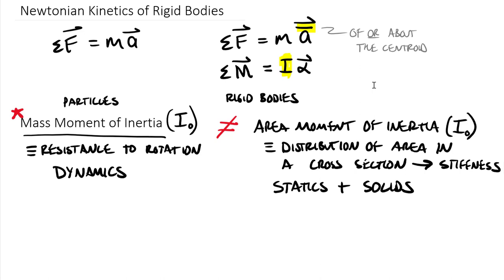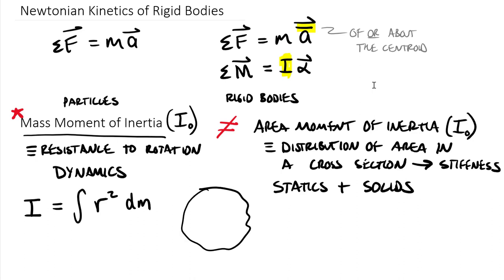The fundamental integral equation tells us that our moment of inertia I is equal to the integral of R squared, where R is the distance from our axis of interest to an element on that body, dm — a differential mass. For a three-dimensional object, if we extract a little cube and we're interested in the moment of inertia about a particular y-axis, we identify the distance R over to that little mass to find the moment of inertia about that axis.